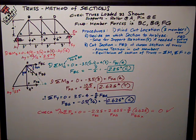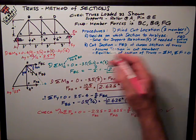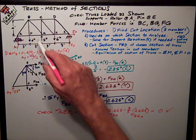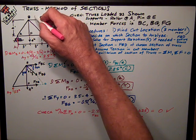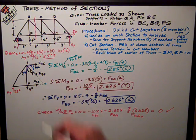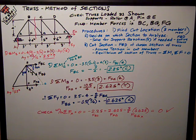So part of the analysis is to see where we need to cut a section. Well, this one's obvious. I want BC, BG, and FG, so I cut a section right here. And that's going to be part of my analysis.